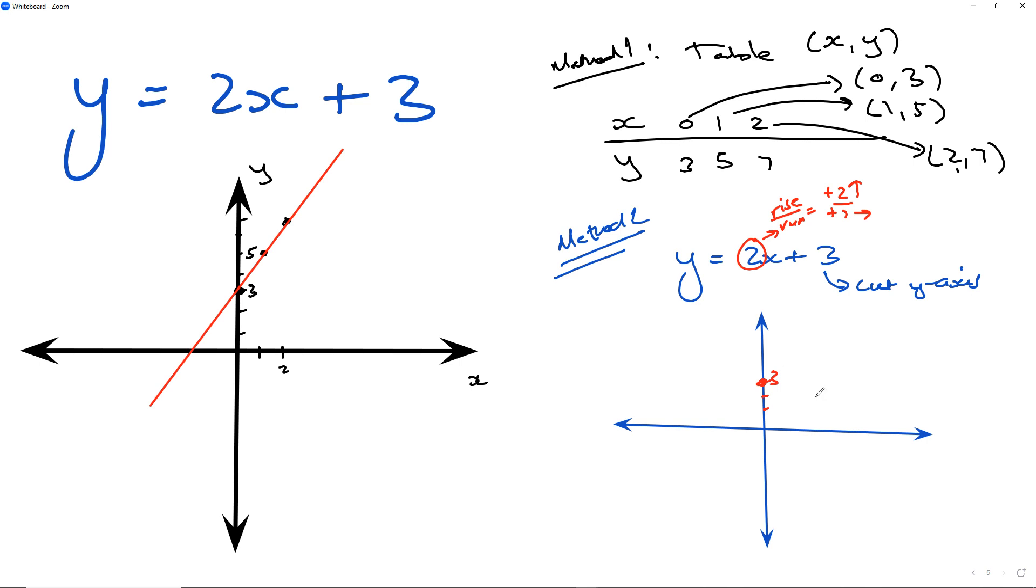When you're using method 2, we're basically using our gradient intercept method, so we got our y-intercept and our gradient. We would jump two units up and one unit right and put another point there, the point 1 and 5. So we jumped up two units just like that and then we jump one unit right starting at the y-intercept and we put a dot at where we land. Once we get that, all we have to do is connect those two dots and we've got the exact same straight line. That's method number two. Whichever method you choose, you can use the table method quite quickly as well if you found that easy.